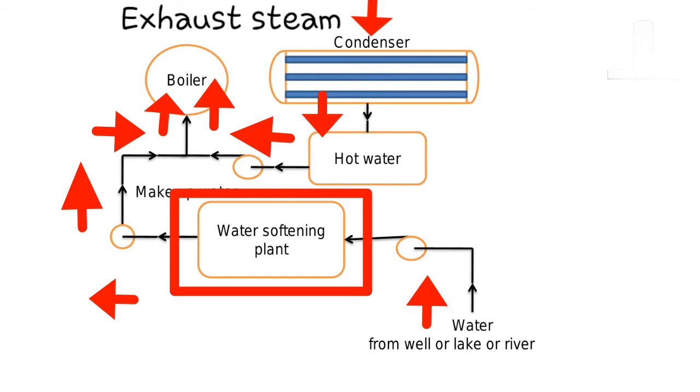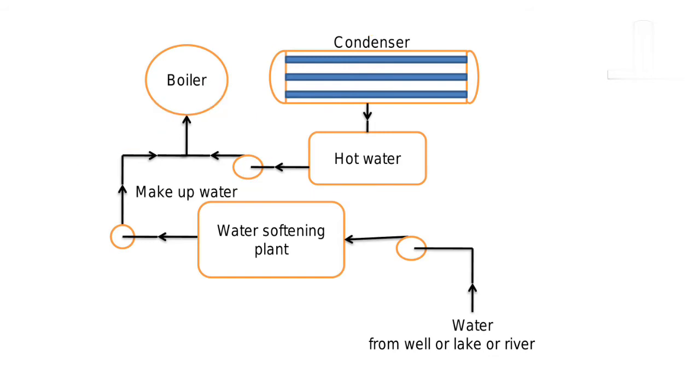The conclusion of this feed water circuit is: the exhaust steam from the turbine is condensed by the condenser and is sent back to the boiler along with makeup water.